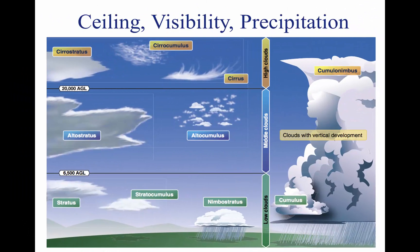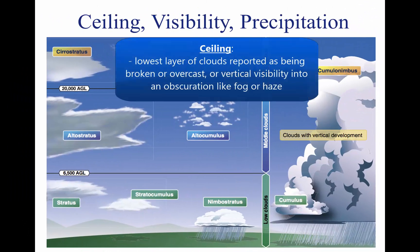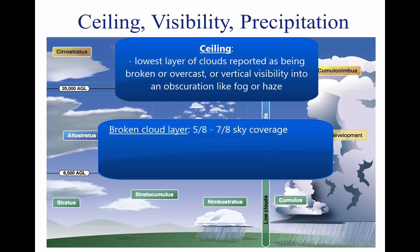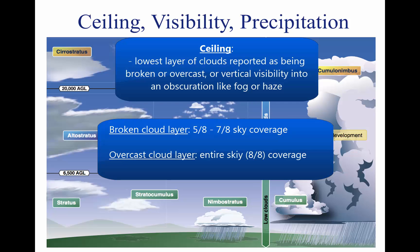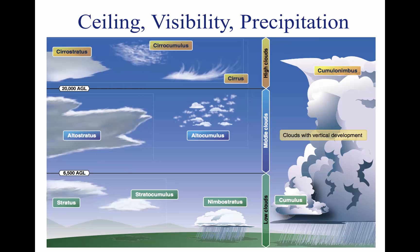For aviation purposes, a ceiling is the lowest layer of clouds reported as being broken or overcast, or the vertical visibility into an obscuration like fog or haze. Clouds are reported as broken when five-eighths to seven-eighths of the sky is covered with clouds. Overcast means the entire sky is covered with clouds. Current ceiling information is reported by the Aviation Routine Weather Report (METAR) and automated weather stations of various types.